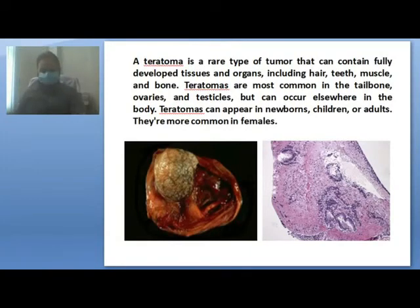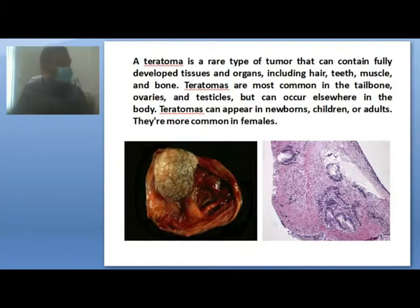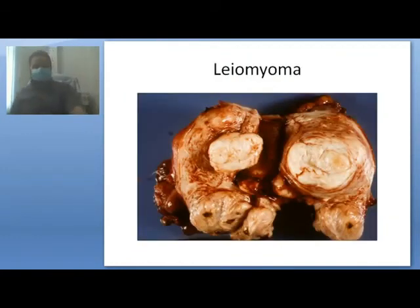Teratoma can form in the tailbone (sacrococcygeal teratoma), ovaries, or testicles, but can also occur elsewhere in the body. Teratomas can appear in newborns, children, or adults, and are more common in females. Now we come to another tumor — a benign tumor of smooth muscle origin: leiomyoma. This is a very common tumor that can appear in gross examination during an exam, which is why it is very important.